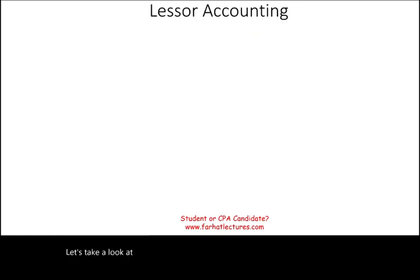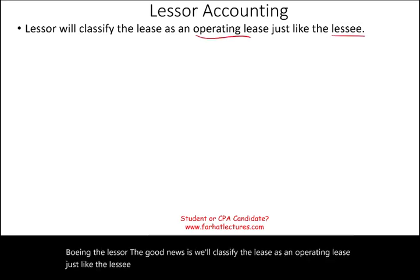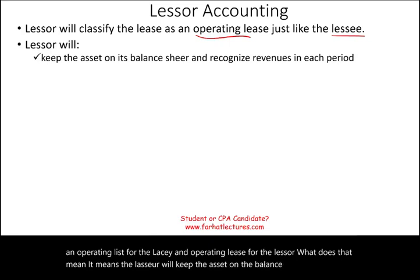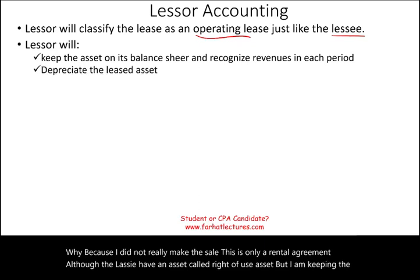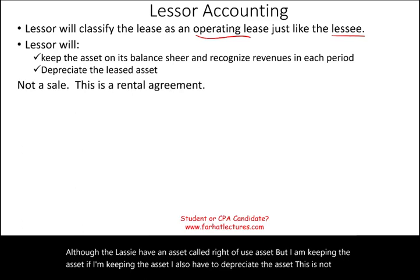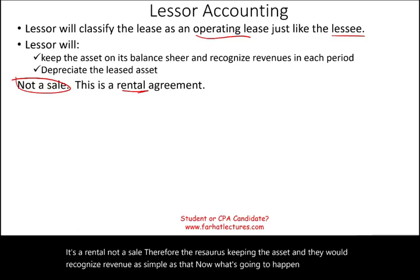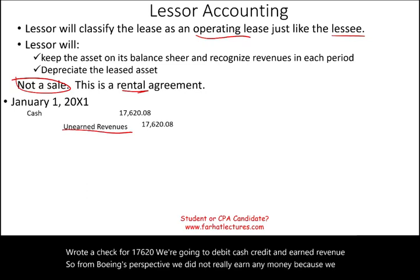Now let's look at this from the lessor's perspective — Boeing. The lease is classified as an operating lease for the lessor as well as the lessee. This means Boeing will keep the asset on the balance sheet and recognize revenue each period, because this is a rental agreement, not a sale. When Delta writes the first check for $17,620, Boeing debits Cash and credits Unearned Revenue — they haven't earned it yet since the lease was just signed.